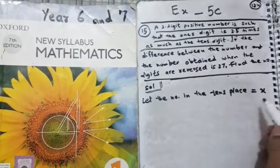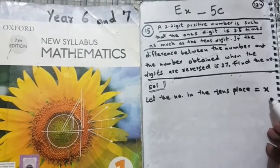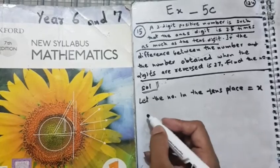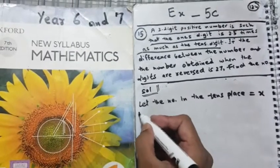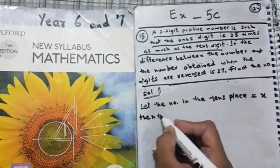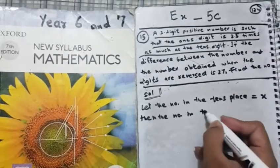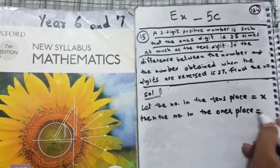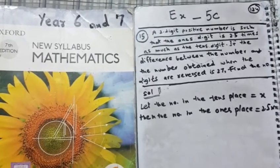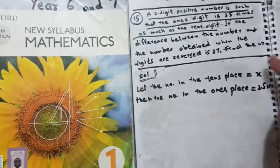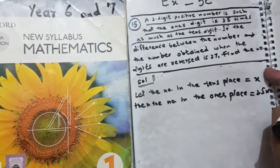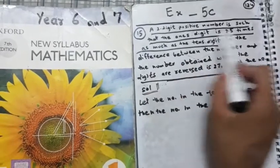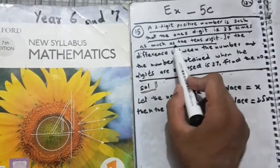So, first of all, we will know the 10's digit. Then, we will know the 2.5 again. So, in the next line, you shall write, then the number in the 1's place will be equal to 2.5 of the number which was supposed in the 10's place. A 2-digit positive number is such that the 1's digit is 2.5 times as much as the 10's digit.